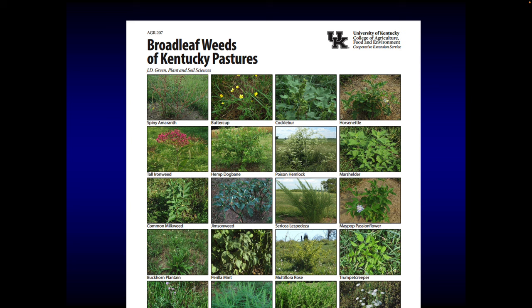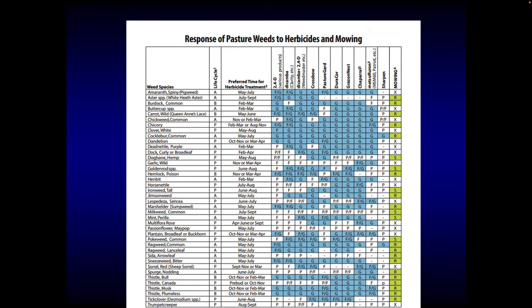We've got a great publication on display outside. It identifies major pasture weeds — it's by Dr. Green. It tells you how well different herbicides work for specific weeds, and more importantly, it tells you when to apply that herbicide. It's not just applying a herbicide; you've got to apply them at the right growth stage to get the optimum value. If you ever need weeds identified, come see Adam. If he can't identify it, he can get it to somebody who can.